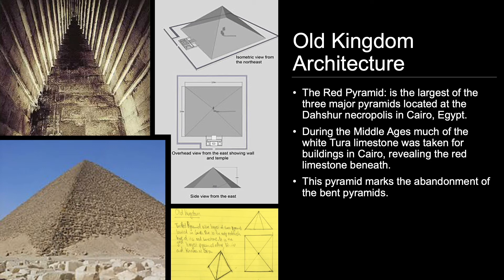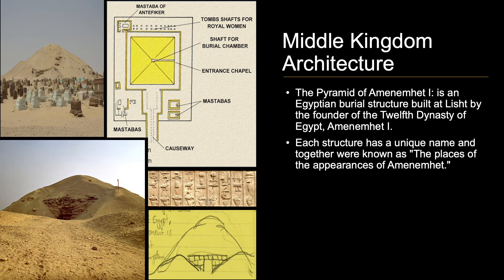The Pyramid of Amenemhat I is a Middle Kingdom burial structure built by the founder of the 12th Dynasty of Egypt, Amenemhat the First. The pyramid is similar in approximate size and form to Old Kingdom pyramids, but differs in that each component structure in the pyramid complex has its own unique name. The structures together were known as the 'Places of the Appearance of Amenemhat.' The causeway ran in a straight line on the axis of the pyramid and temple but was built without a roof, with walls apparently decorated with scenes depicting processions of foreigners, estates, nobles, and gods. This generation of pyramids utilized mud brick in their construction, which presents challenges for preservation and sustainability.